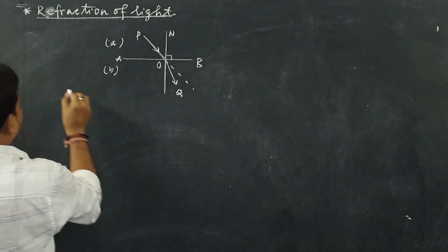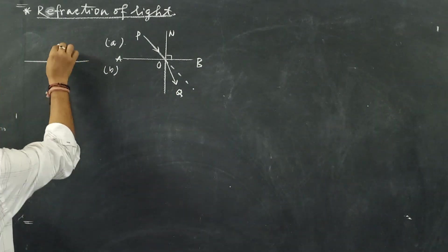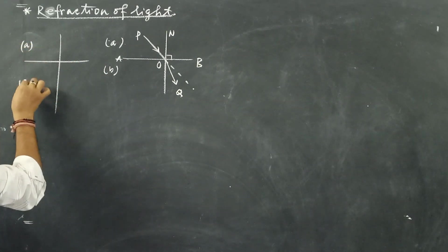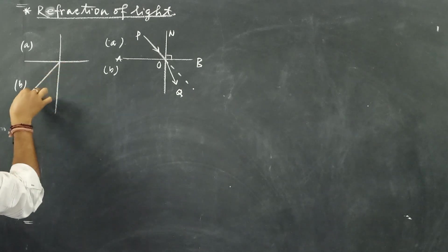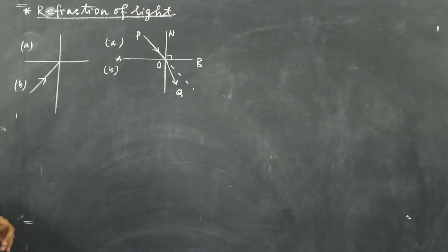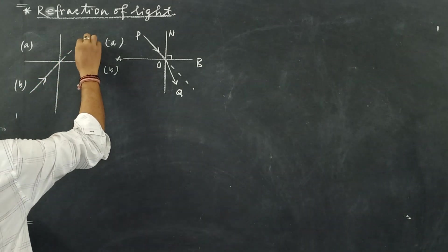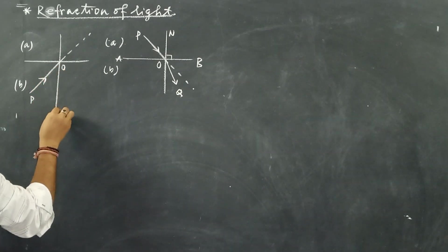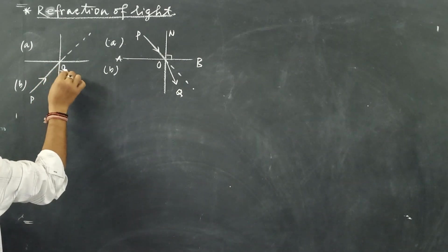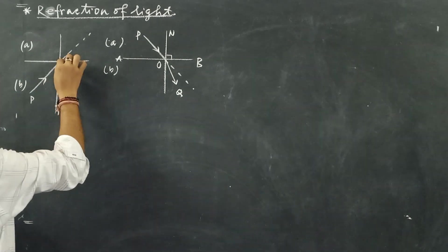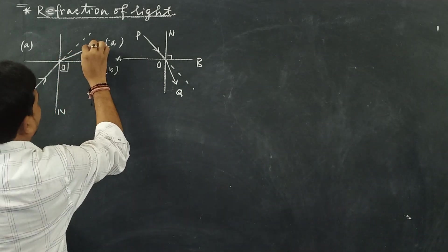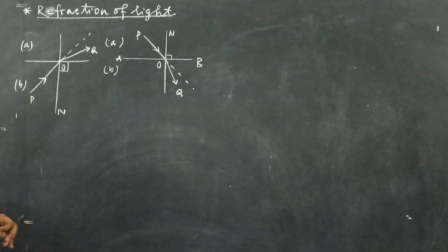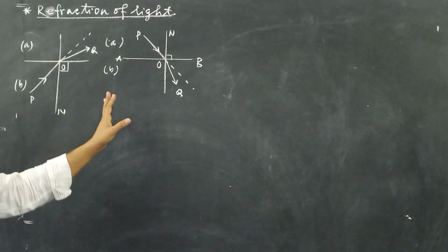In another ray diagram, consider a light ray coming from medium B. PO is the incident light ray, and this is the normal. The light ray moves away from the normal along OQ. Here also the light ray bends.